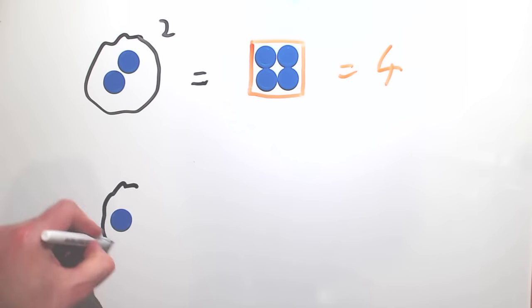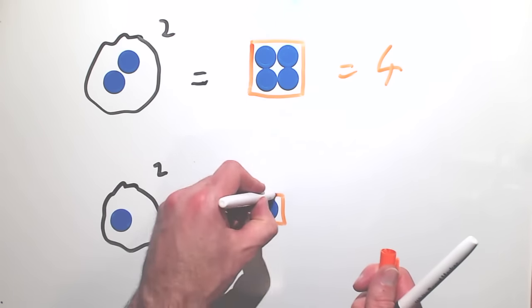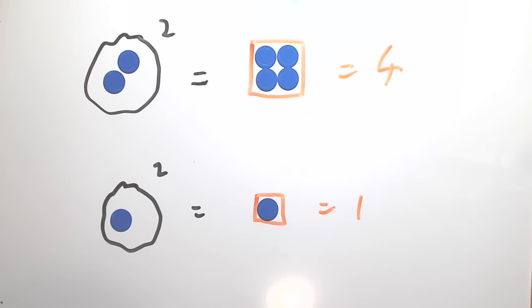What about one? Well, if we make a square with a single counter along each side, then we're already done. The total number of counters required is one, which is also equal to the number of rows multiplied by the number of columns.